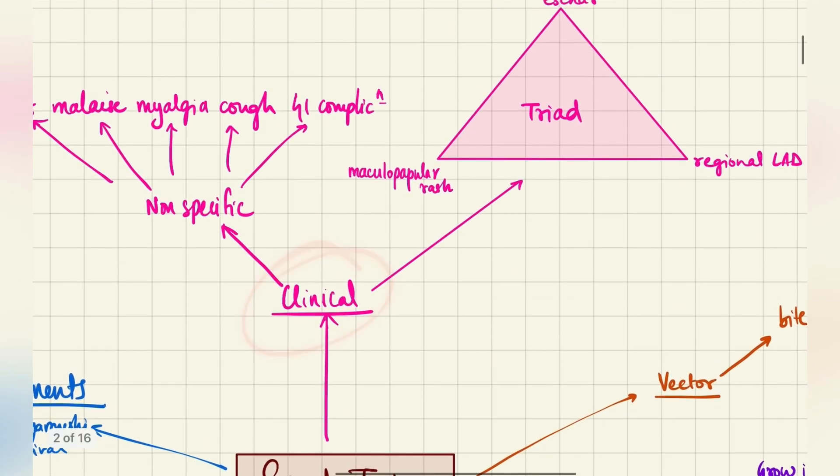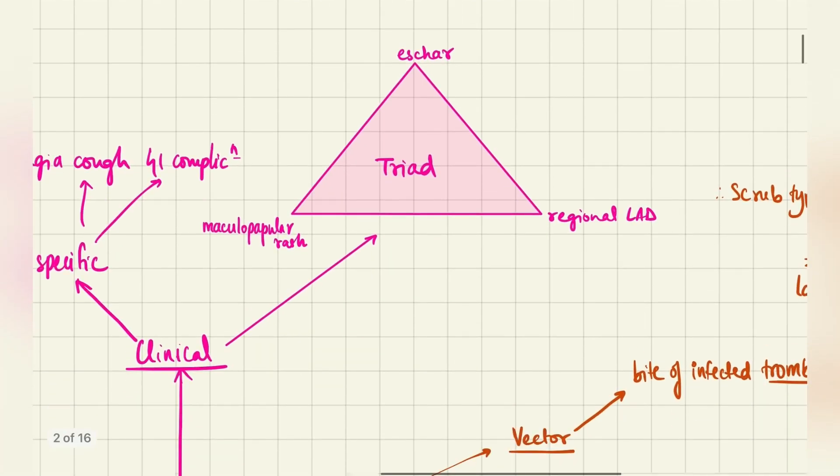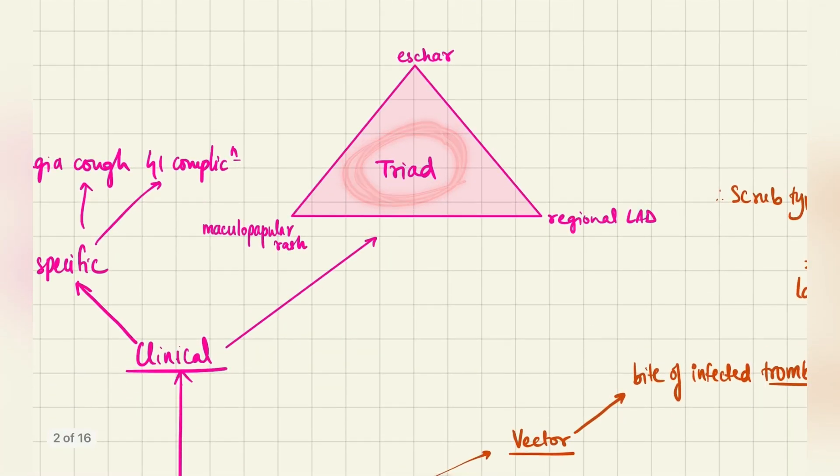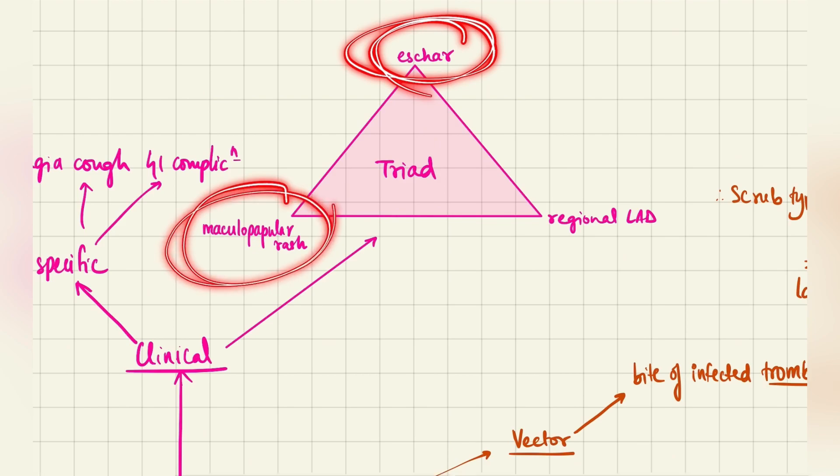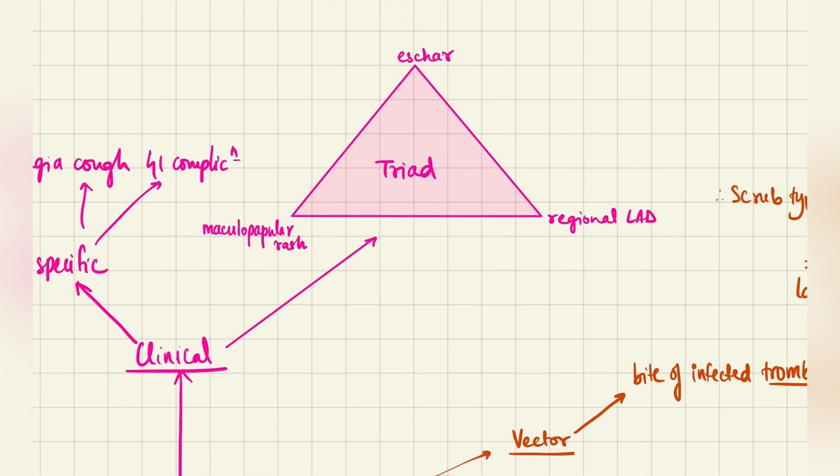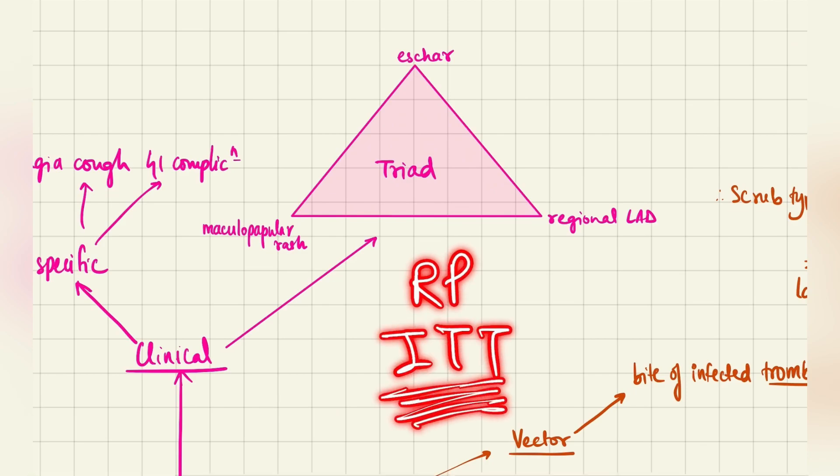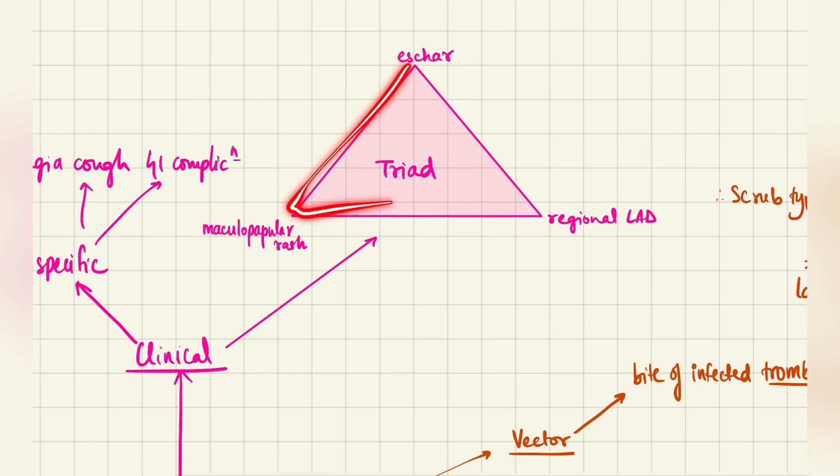Coming to the clinical manifestation, which is the most important thing to remember here, it has a very famous triad of eschar formation, maculopapular rash, and regional lymphadenopathy. This is a classical triad and was also followed by Rickettsial pox and Indian tick typhus if you remember from the previous video, but it is classical to scrub typhus.